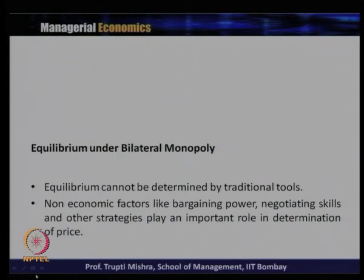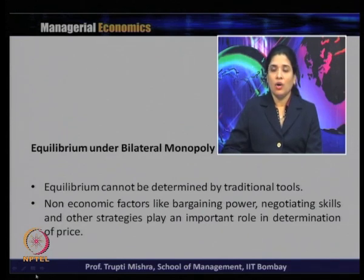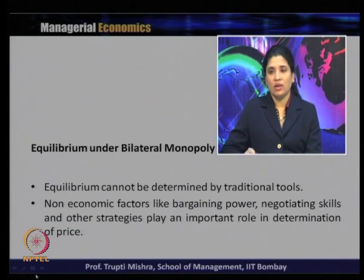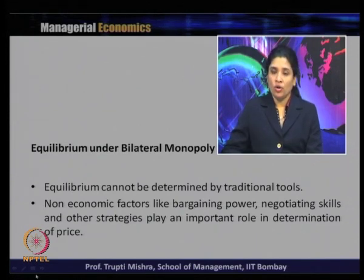How does equilibrium take place in the case of a bilateral monopoly? Equilibrium cannot be determined by traditional tools because there is an absence of a demand curve in the case of the monopsonist and an absence of a supply curve in the case of the monopolist. Since the demand curve and supply curve are absent for buyers and sellers, equilibrium cannot be determined by the traditional tools — the typical demand-supply or profit maximization through marginal revenue and marginal cost. Here, economic factors like bargaining power, negotiating skill, and other strategies play an important role in price determination.